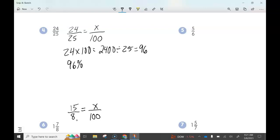We cross multiply, 15 times 100. Let's write this out. It's going to equal 1,500.